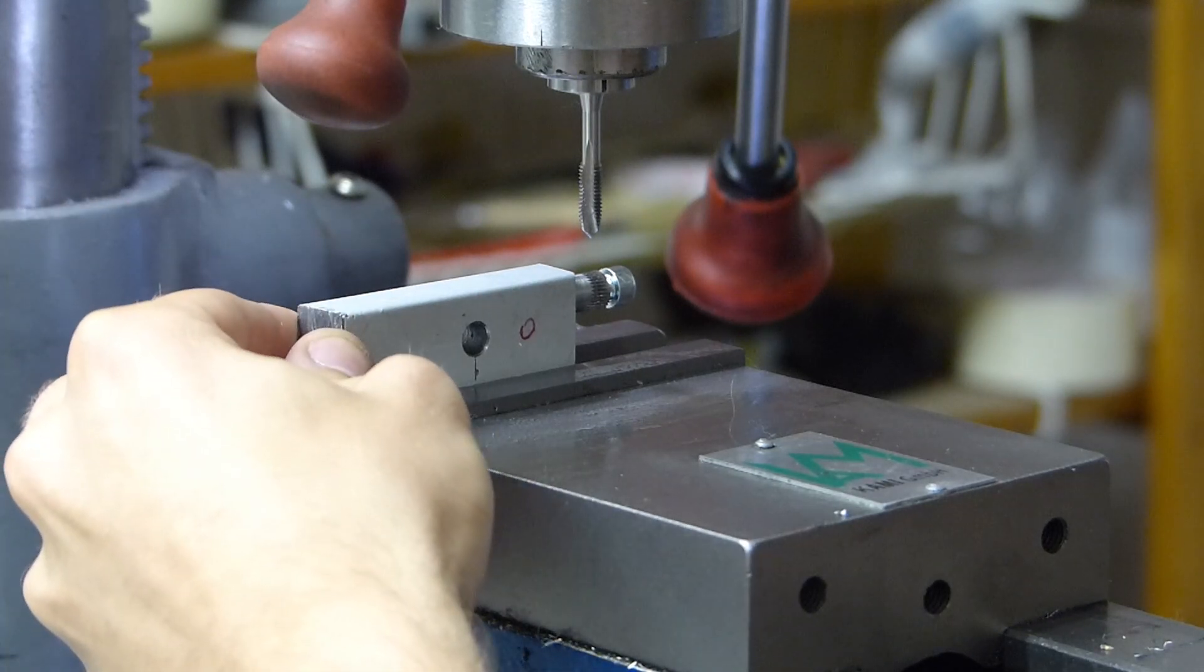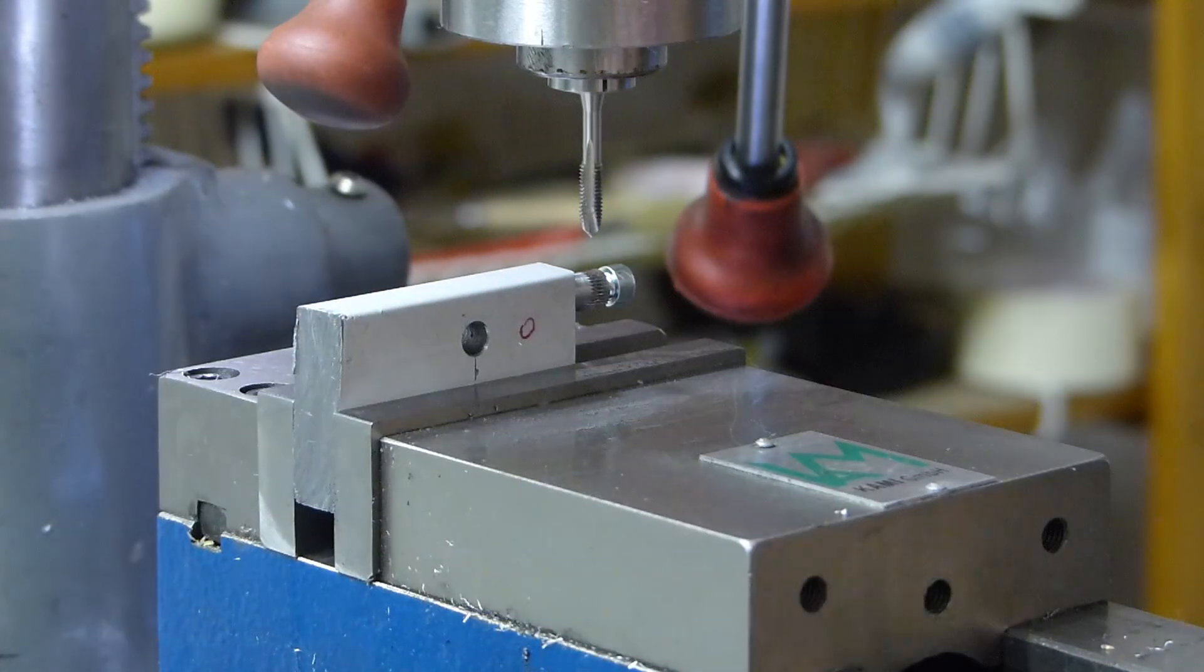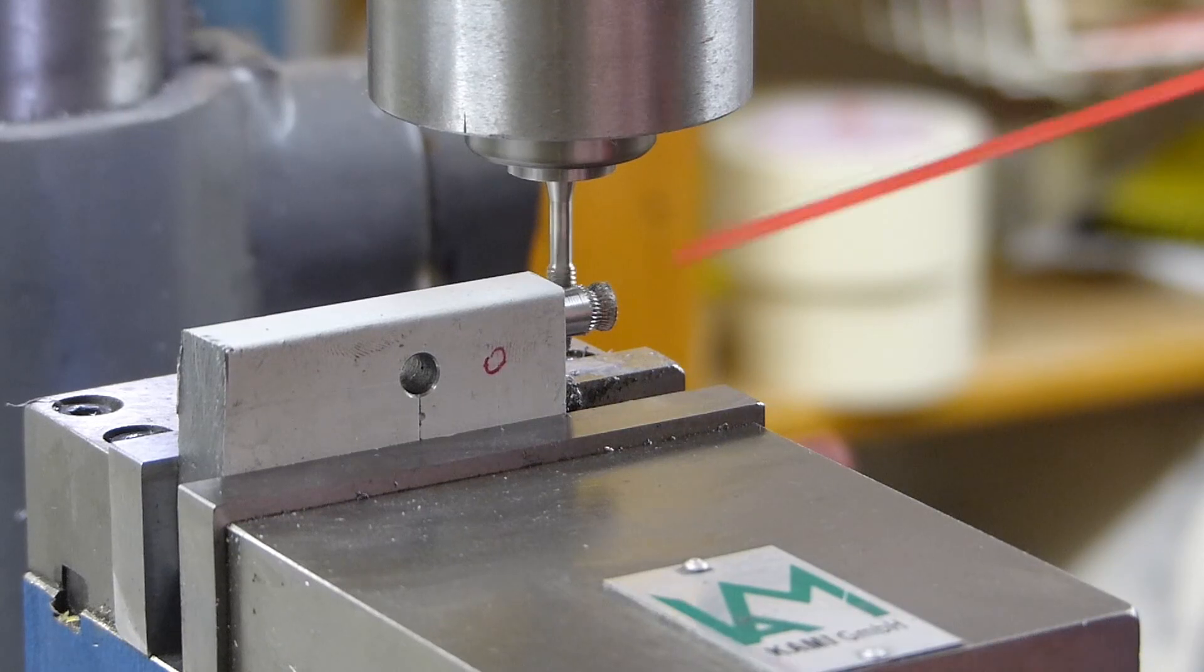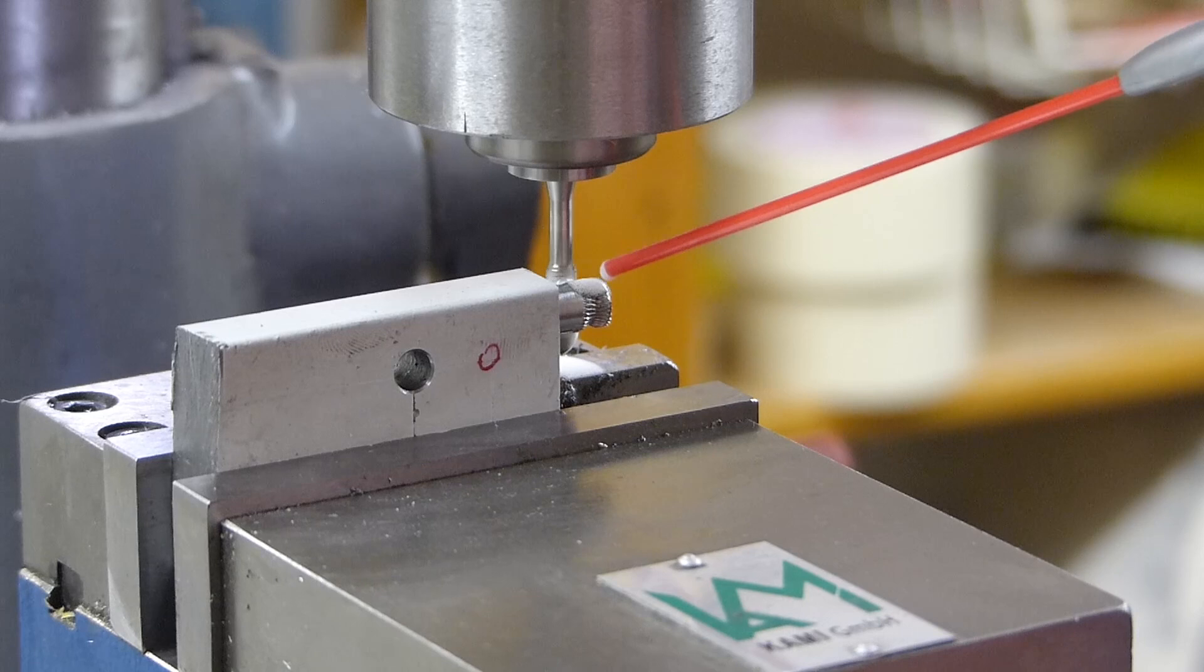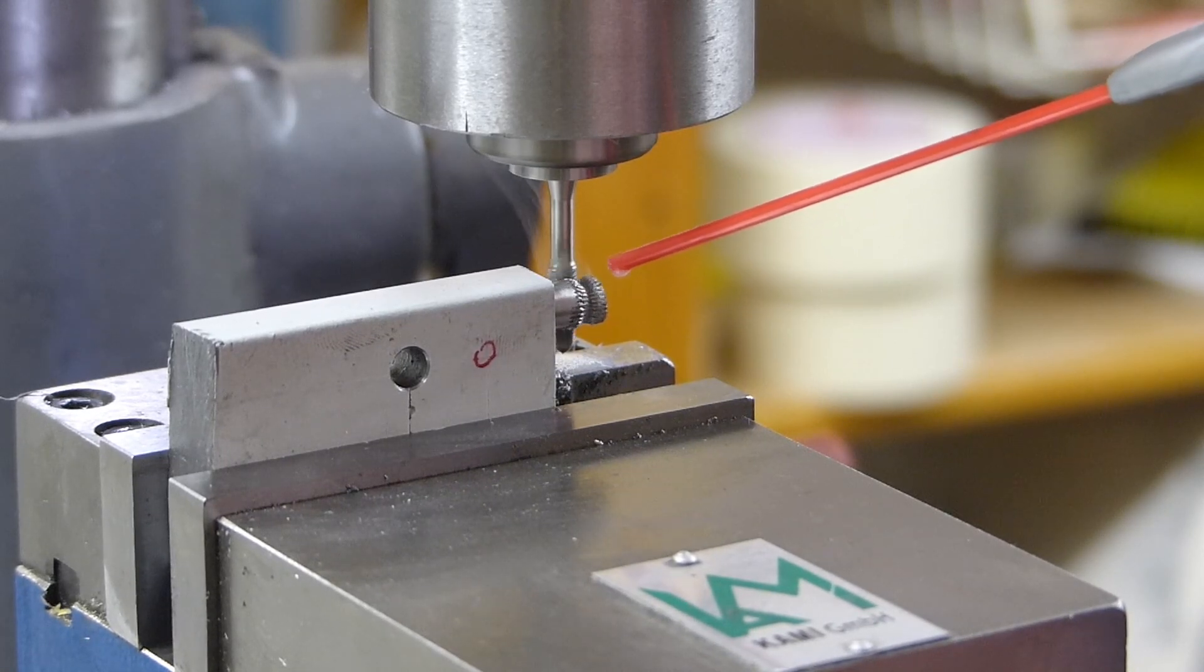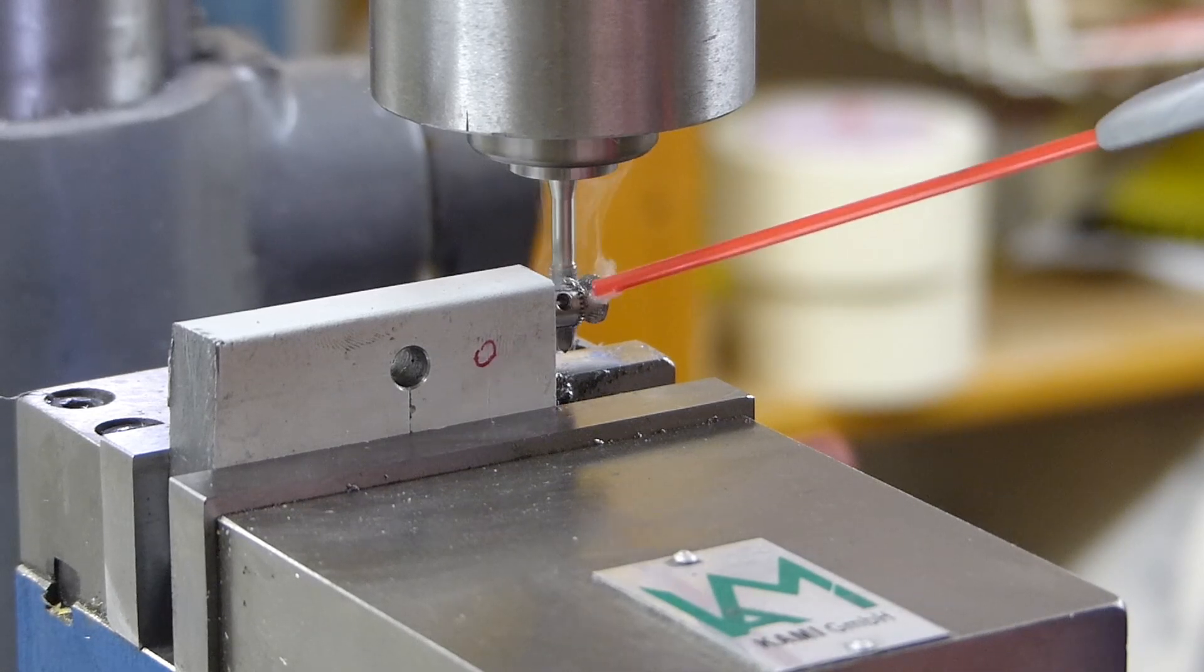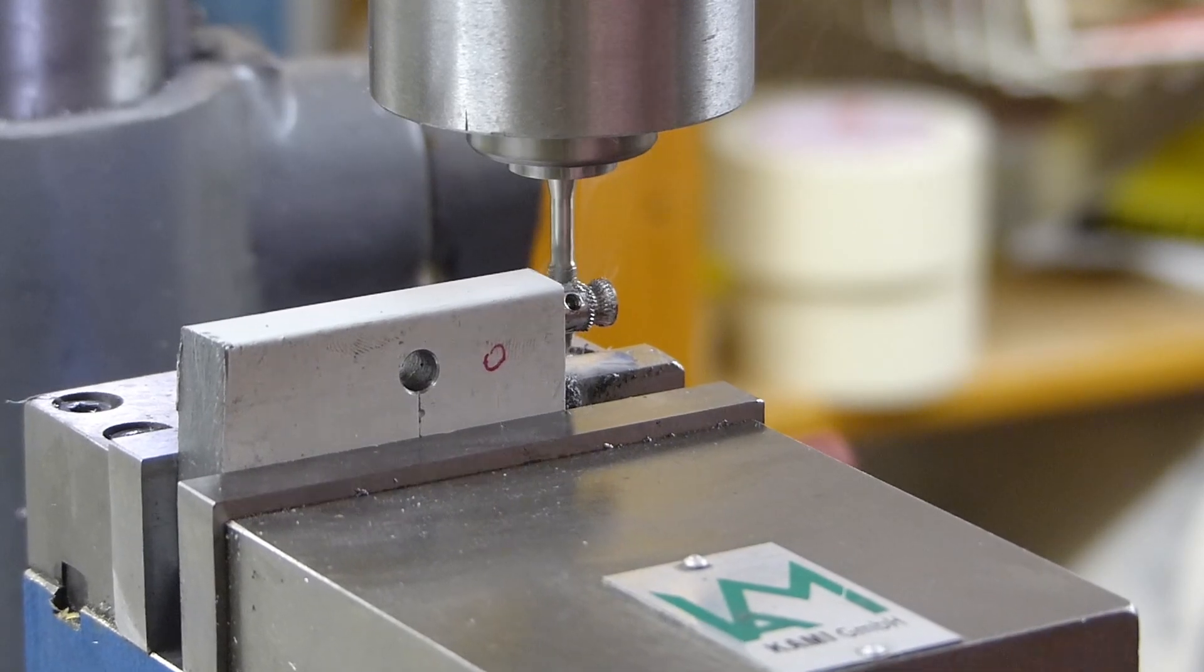Once you have everything set up, start working your way in. Make sure that the tap doesn't start drifting sideways. Check the depth regularly and don't cut too deep because that will actually degrade the stability of the teeth. The ideal depth is around the point where the tap cuts all the way from the very top of the teeth to the bottom.